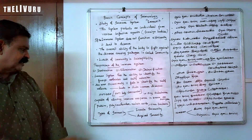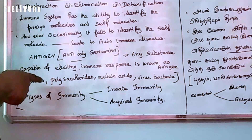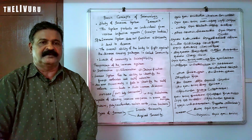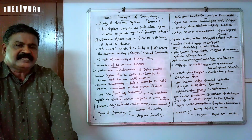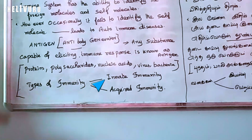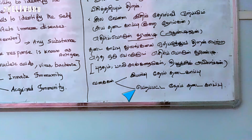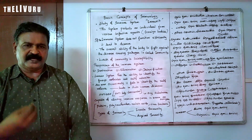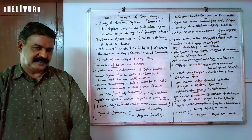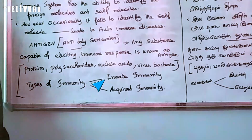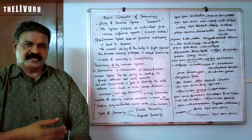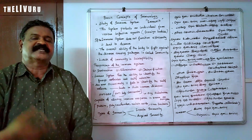There are two main types of immunity: the first is acquired immunity, and the second is innate immunity, also known as natural immunity.